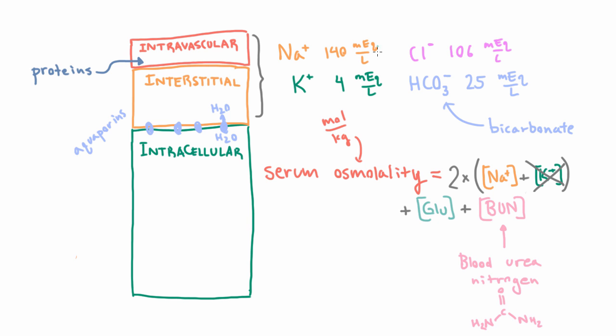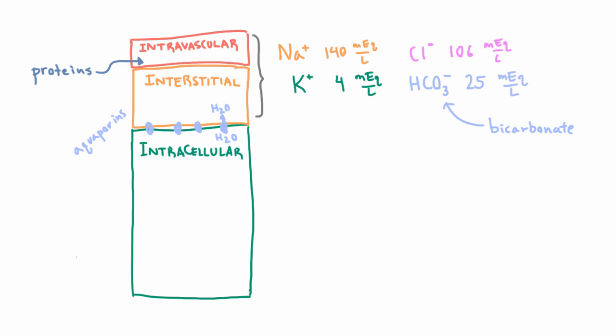Now unfortunately for sodium they give you the concentration in milliequivalents per liter, which is pretty much the same as millimoles per kilogram. But for glucose we normally get the concentration in milligrams per deciliter. So we can't just add things with different units. So to convert milligrams per deciliter to millimoles per kilogram we need to take the glucose concentration in those units and divide it by 18.